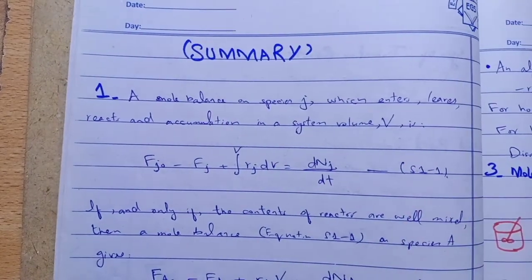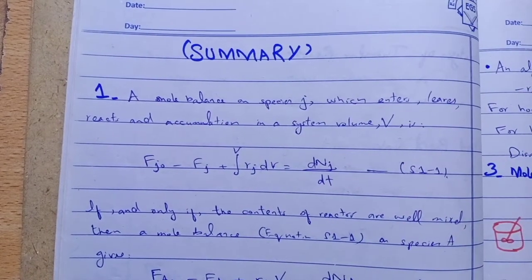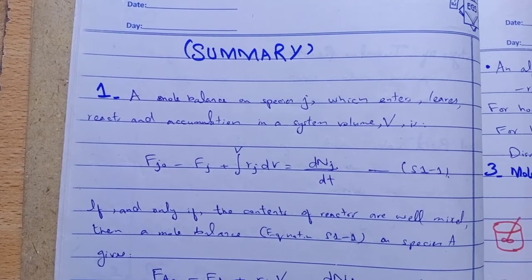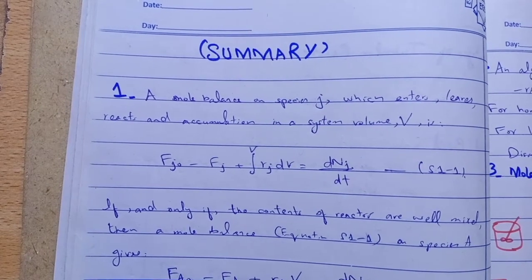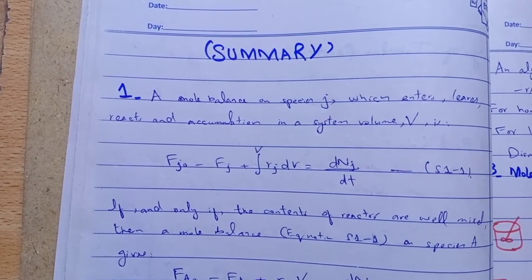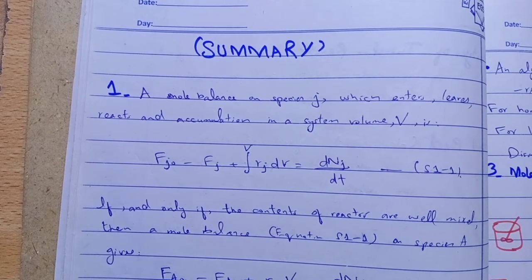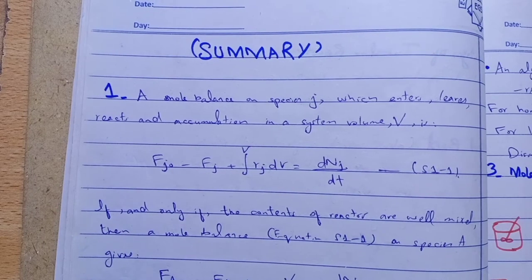Summary of this section: firstly, lecture 6, mole balance on species j which enters, leaves, react and accumulation. Basically the general mole balance equation is in minus out plus generation minus consumption equals accumulation.